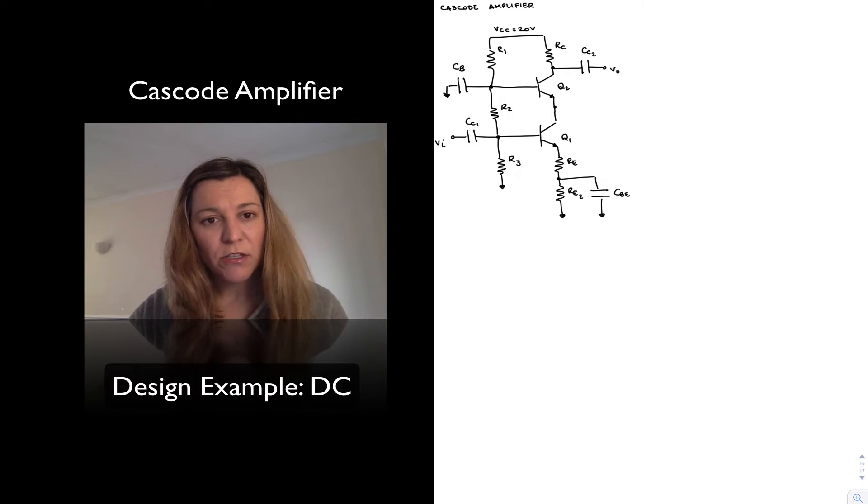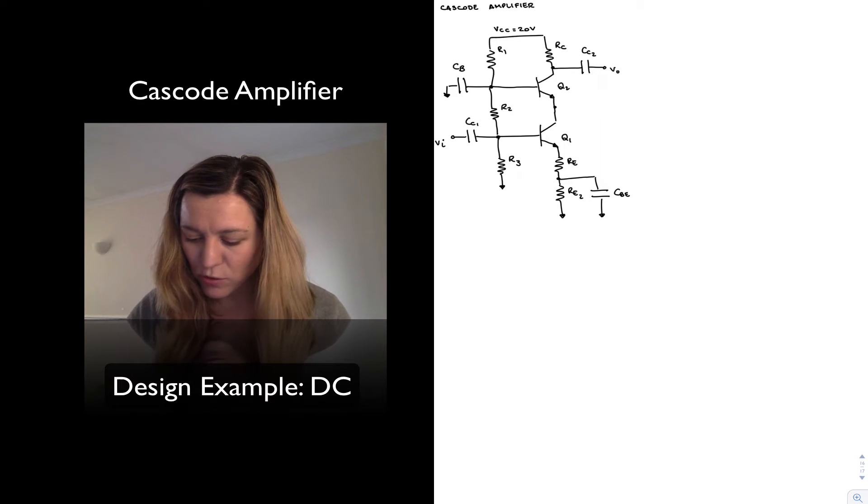Let's imagine, just to keep it consistent with other prior design examples we've done, that we select a VCC of 20 volts. So first I'm going to start with my DC bias analysis.